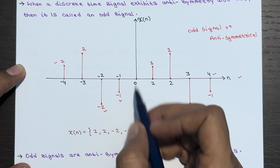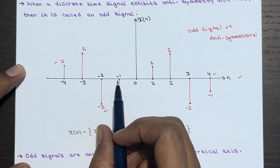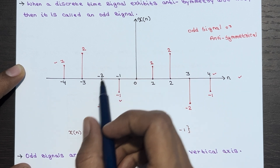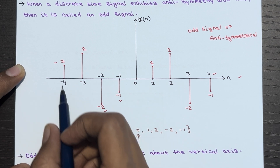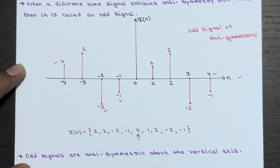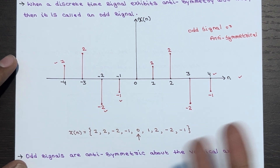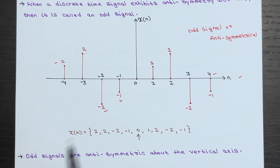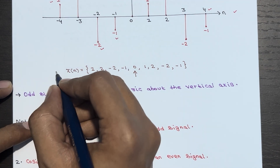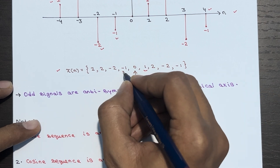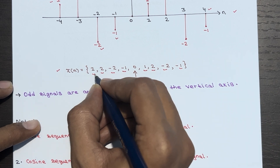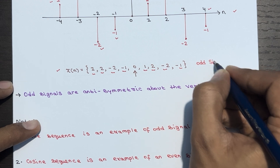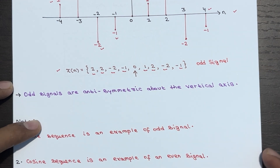If it were symmetrical, at -1 it should show 1, at -2 it should be 2, at -3 it should be minus 2, at -4 it should be minus 1. But this is anti-symmetrical, so you get the opposite amplitudes. You can represent this as: X(n) = {... 1, 2, -2, -1 ...} but instead you are getting minus 1, minus 2, plus 2, plus 1. This is what an odd signal is.